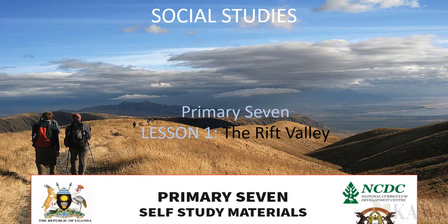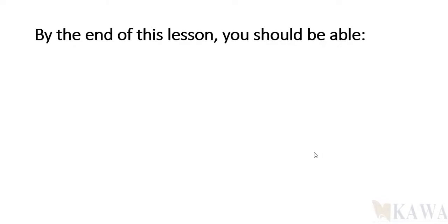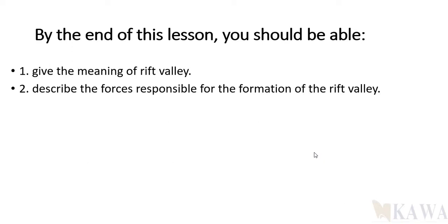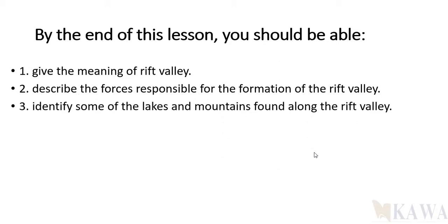We are going to look at this content for primary seven. Here we have the learning outcomes. By the end of this lesson, the learner should be able to give the meaning of the word rift valley, describe the forces responsible for the formation of the rift valley, identify some of the lakes and mountains found in the rift valley, and identify and describe features like escarpments and fault-formed features found in the rift valley region.